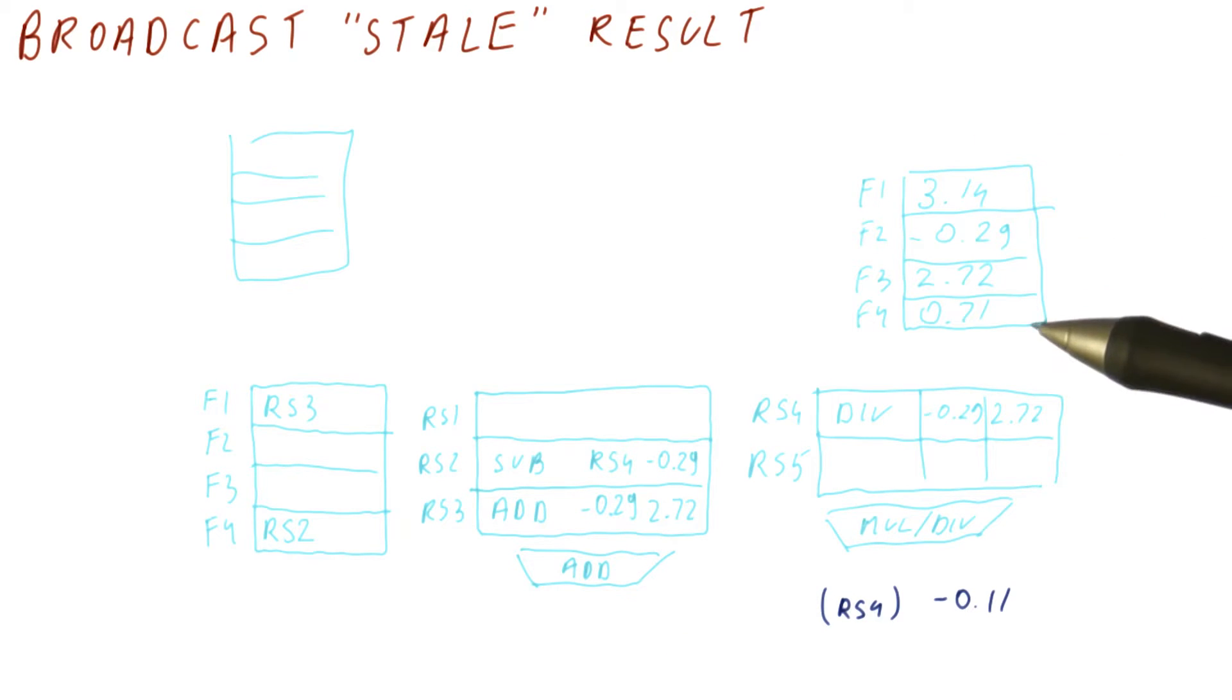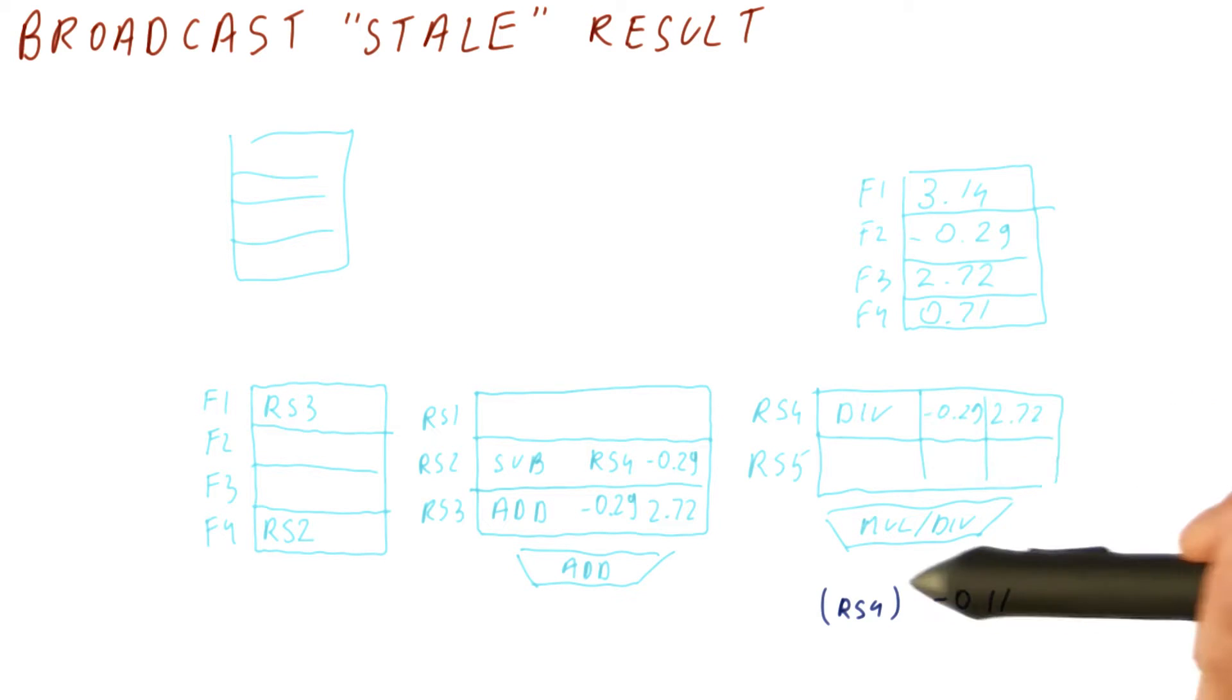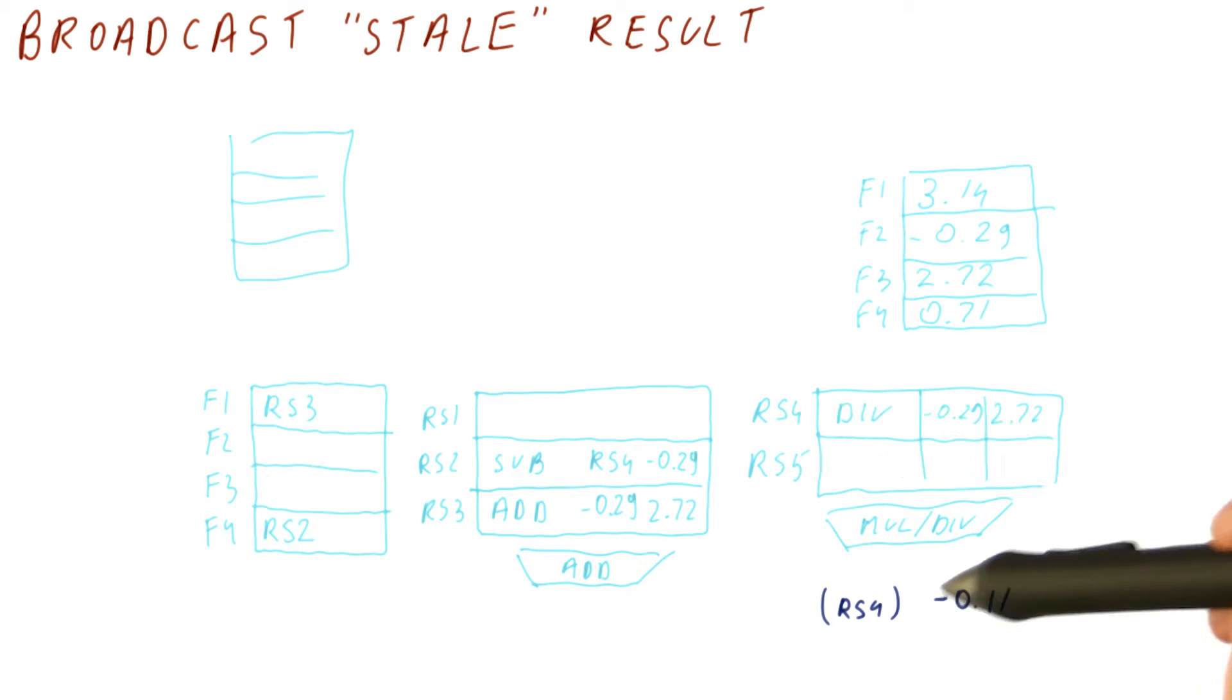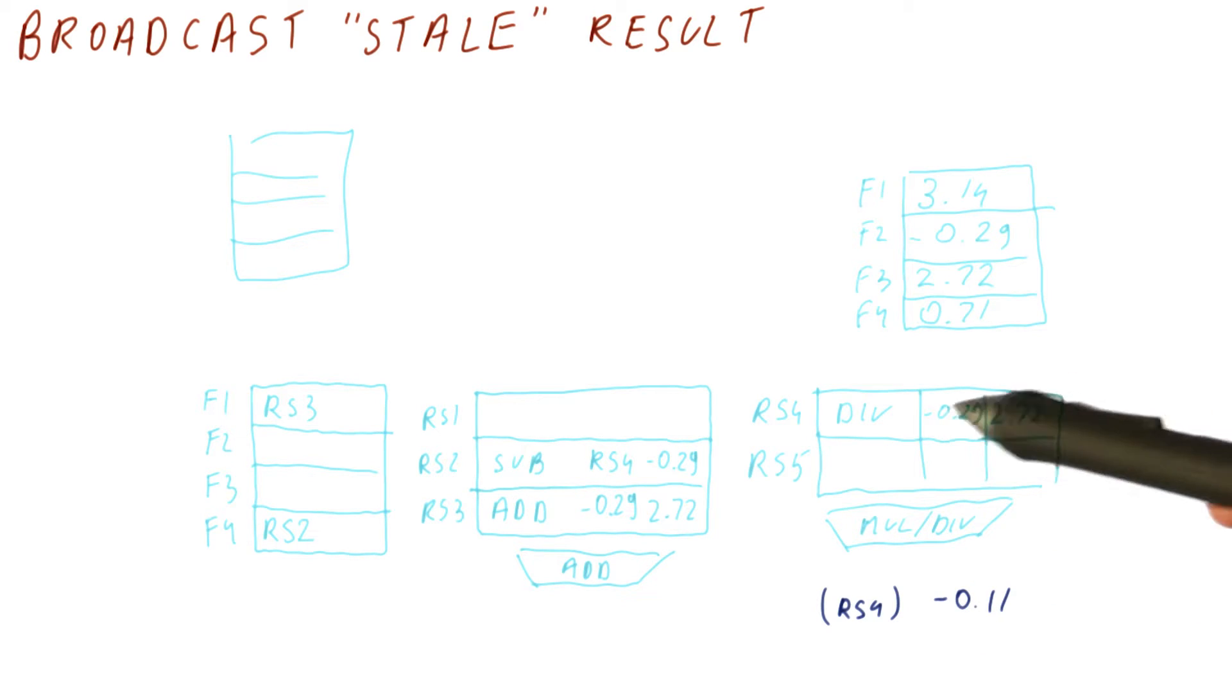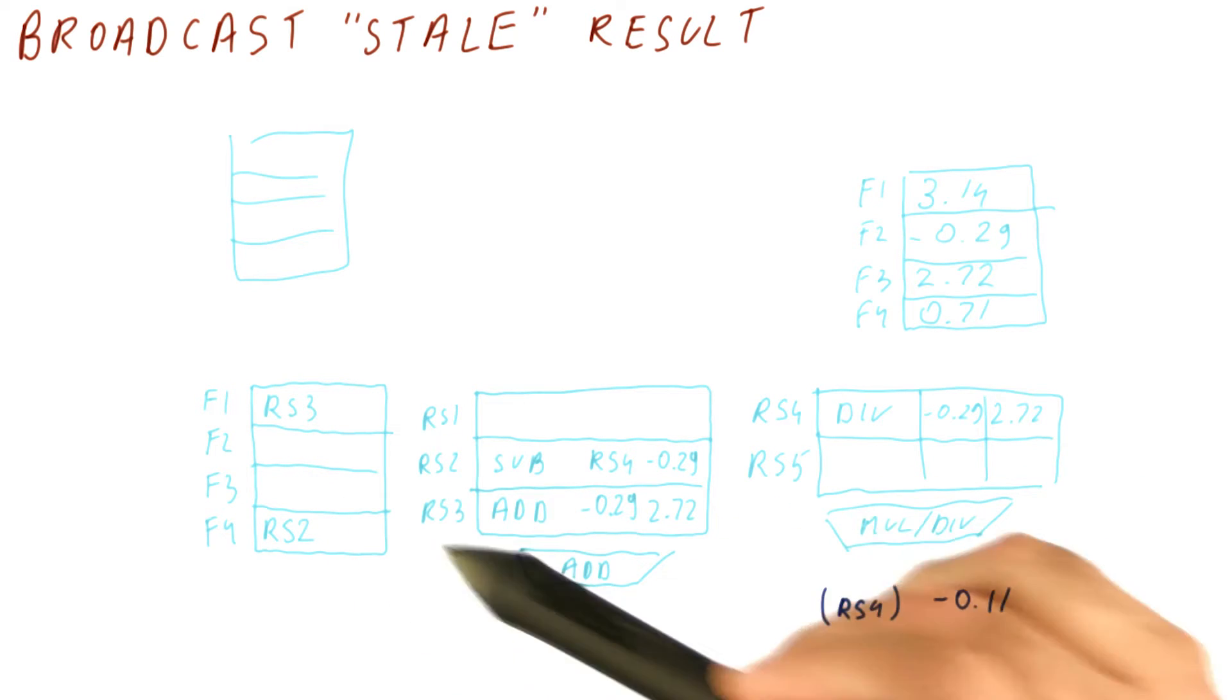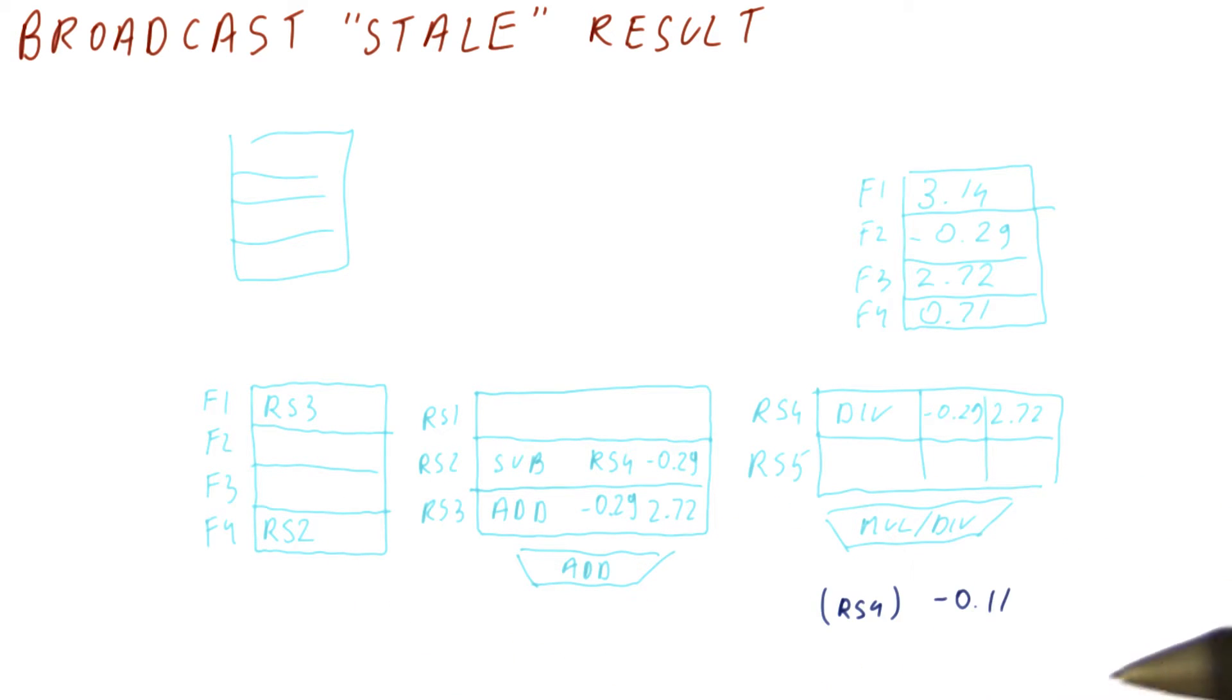Okay, so what we have here is a situation when this divide here is going to broadcast its result. It's going to broadcast that it's a reservation station four and broadcasting this result, which is the result of the division between these two numbers. But if you look closely at the RAT, none of the registers is currently renamed to this instruction.